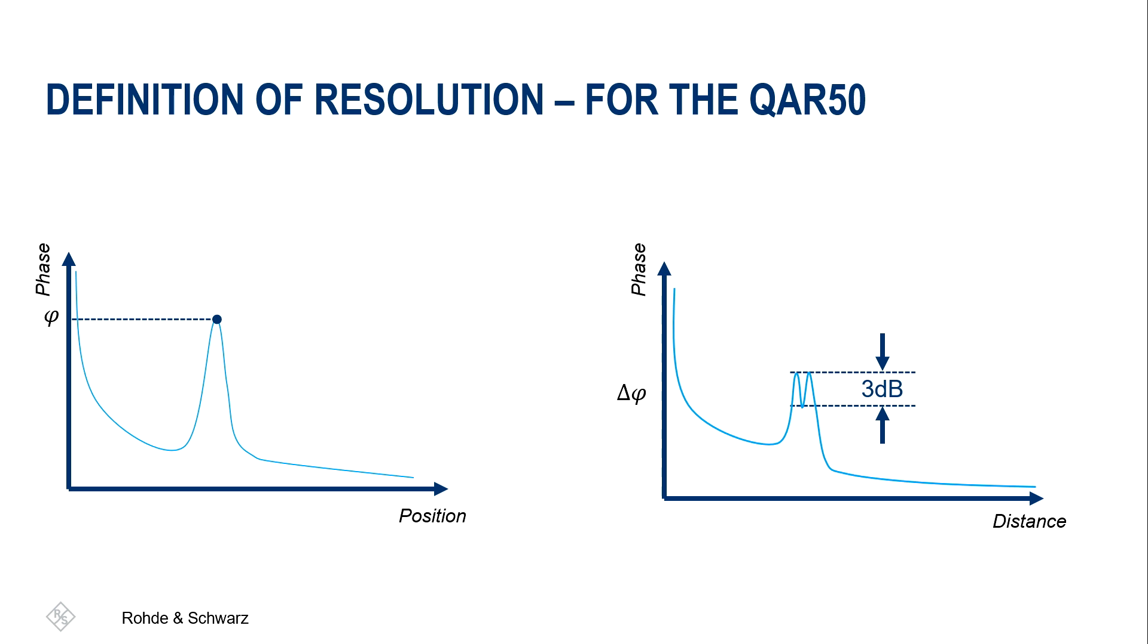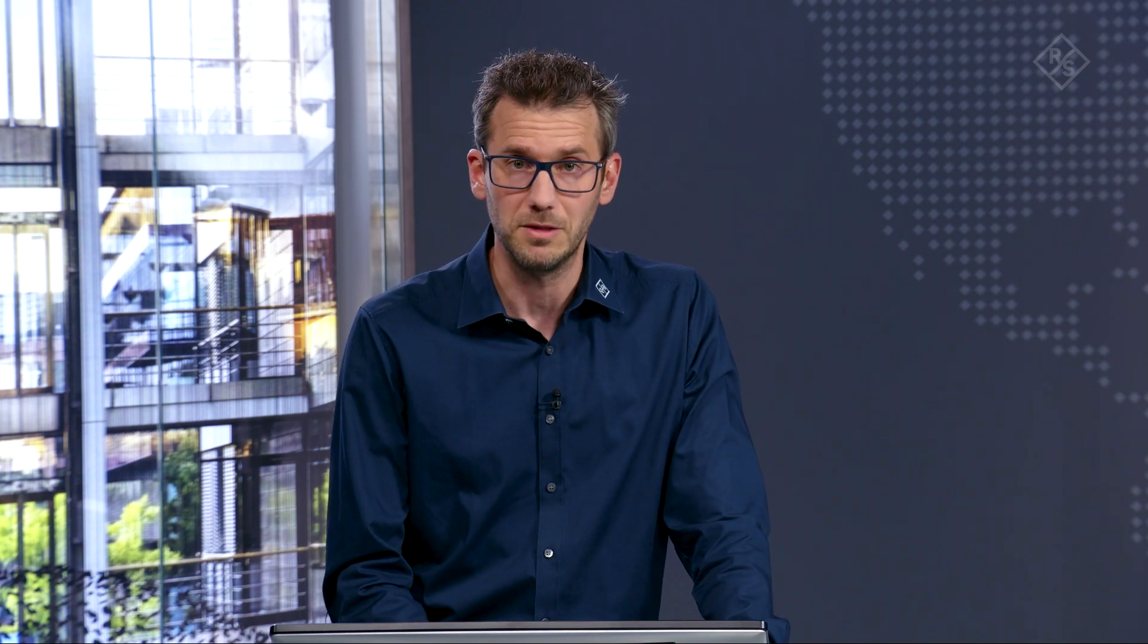On the left hand side, we see that typical one target again, where we can clearly see one target. On the right hand side, we have the same plot with the phase and we say, the phase difference between the peak and the drop in between the two peaks needs to be 3 dB. The problem is, what is actually 3 dB in phase? Because that's not clearly defined. So we had a really hard time to define what is the resolution of the QAR50 because there's no such definition for phase resolution available.